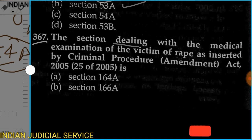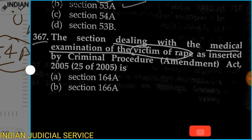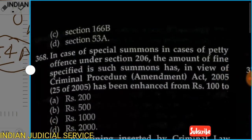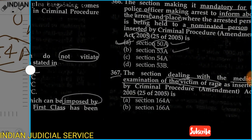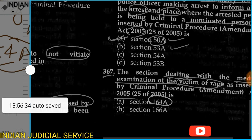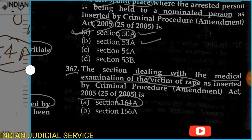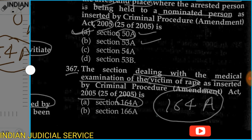Question 367: The section dealing with the medical examination of the victim of rape, as inserted by the Criminal Procedure Amendment Act 2005, is which section? Option A: Section 164A. Option B: Section 166A. Option C: Section 166B. Option D: Section 53A. The answer is Option A, Section 164A, which deals with the medical examination of a rape victim.